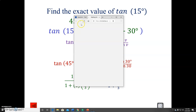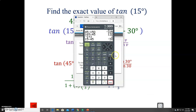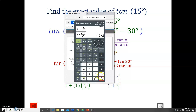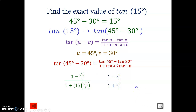The first was minus — my mistake. Let's put it in the calculator: one minus radical three over three on top, and one plus radical three over three on the bottom. The calculator tells us the answer is negative radical three plus two. That's our answer: negative radical three plus two.